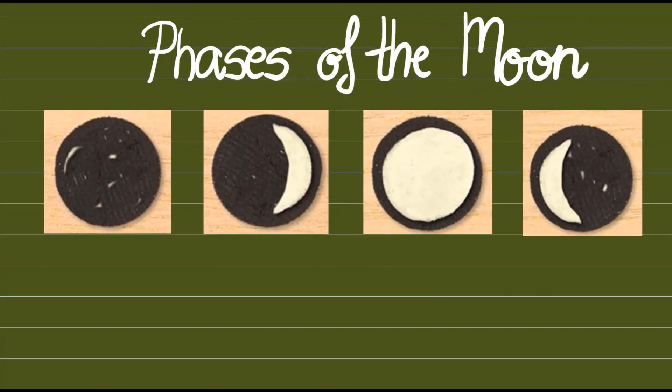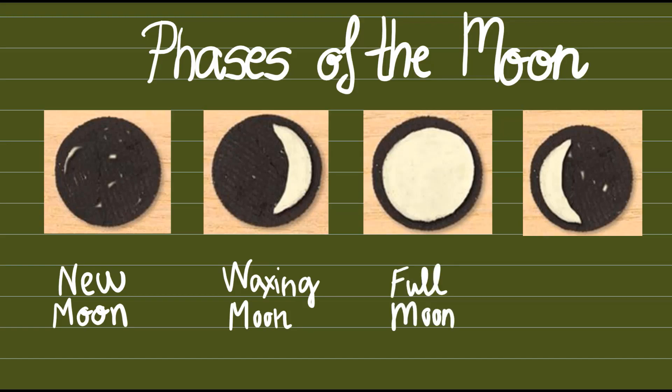And to sum up, here we have a sweet way of revising the phases of the moon. You can use Oreo cookies for this activity if you wish. This is the new moon. This is the waxing moon. This is the full moon. And this is the waning moon.